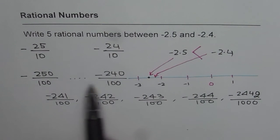So, if you have to write more numbers between the two rational numbers, you can adopt this method. And you can write as many numbers as you want. That is how we can write infinite number of numbers between any two rational numbers.